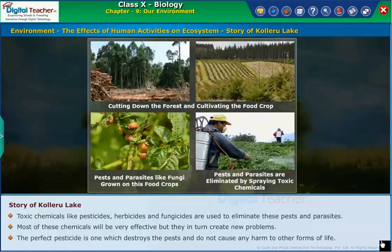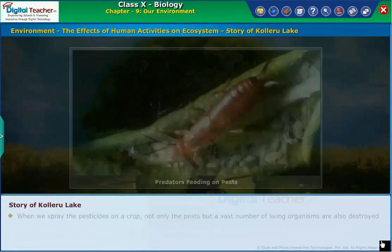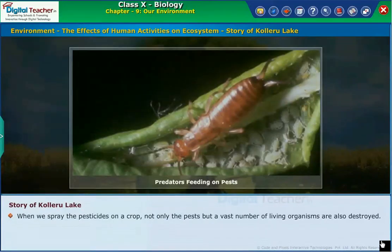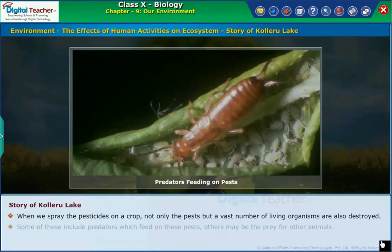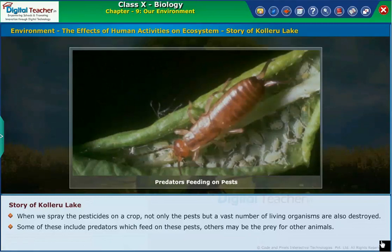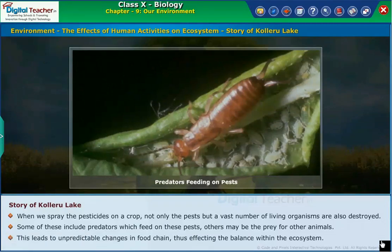The perfect pesticide is one which destroys pests and does not cause any harm to other forms of life. Let us learn how pesticides affect food chains and food webs. When we spray pesticides on a crop, not only the pests but a vast number of other living organisms are also destroyed. Some of these include predators which feed on pests; others may be prey for other animals. This leads to unpredictable changes in the food chain, thus affecting the balance within the ecosystem.